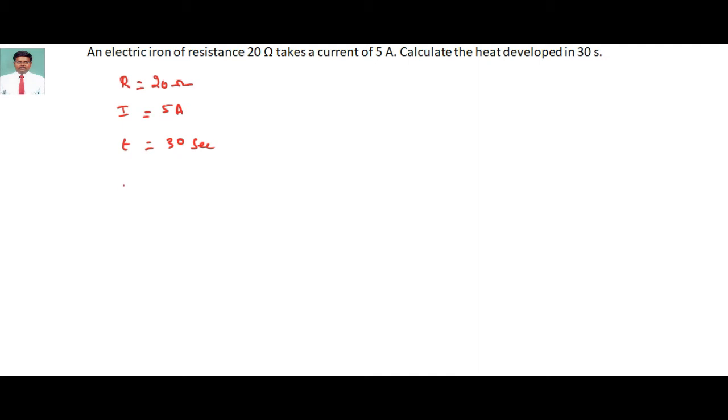I will use the formula H equals I squared RT, Joule's law of heating. I squared equals 5 whole squared into the resistance 20 into the time 30.